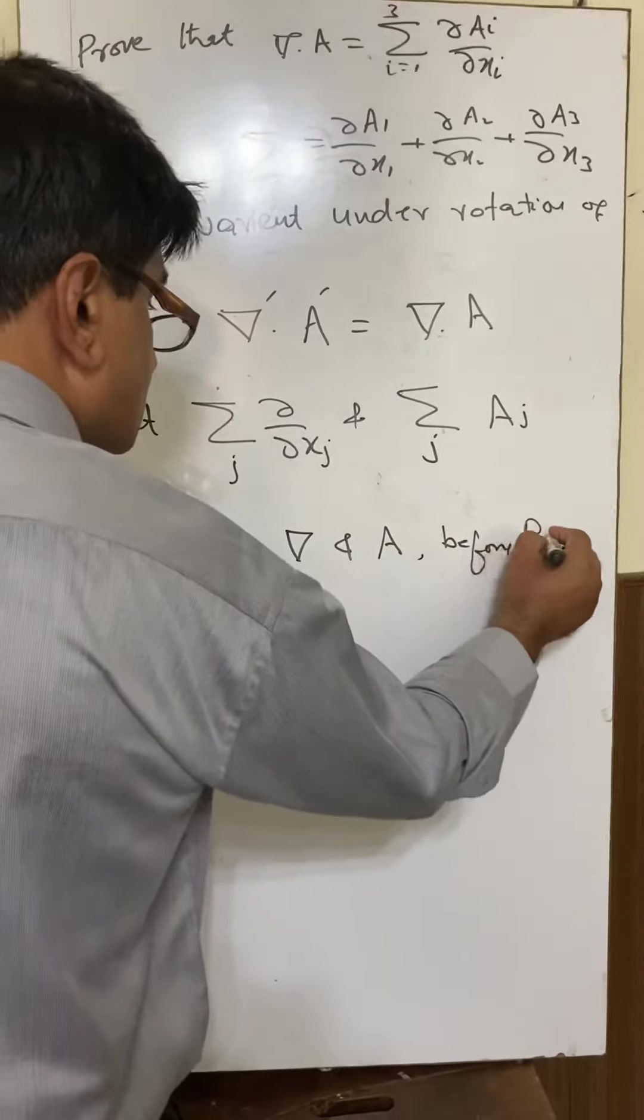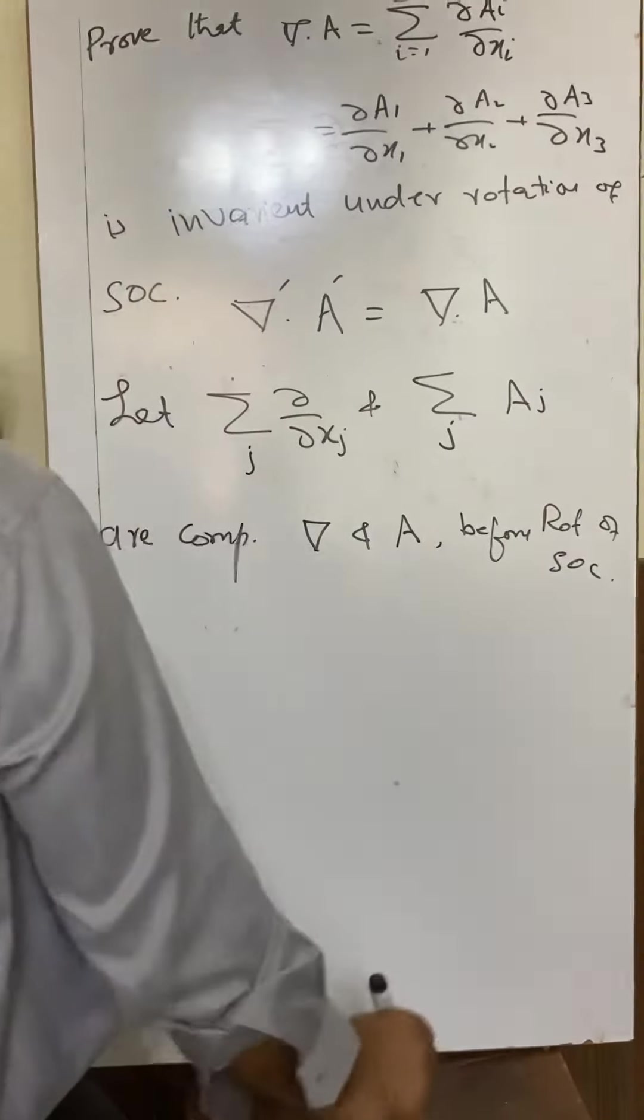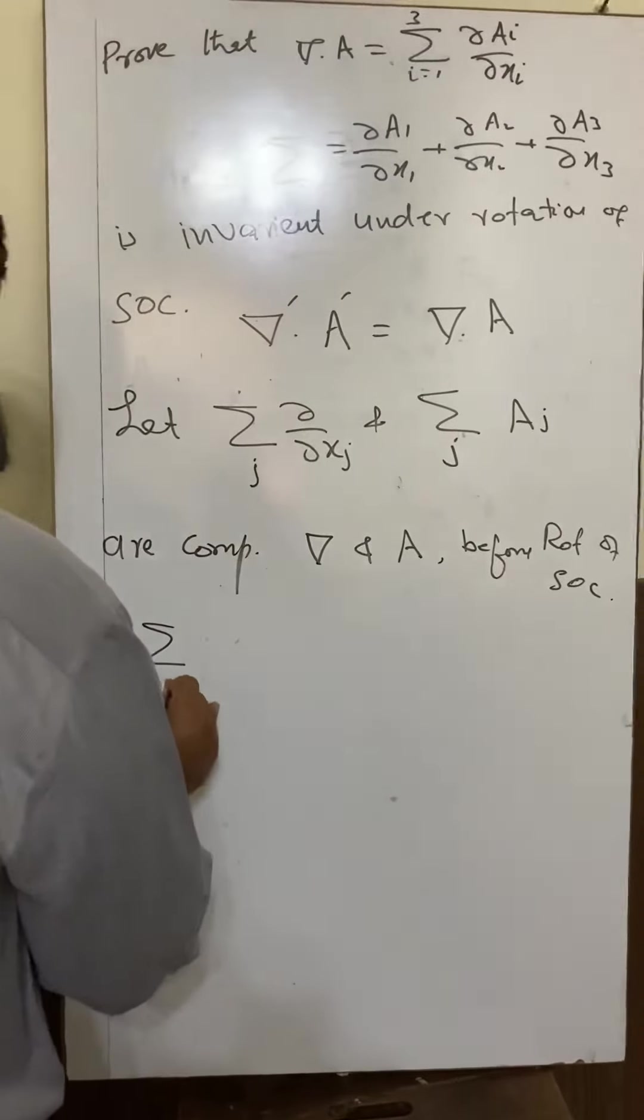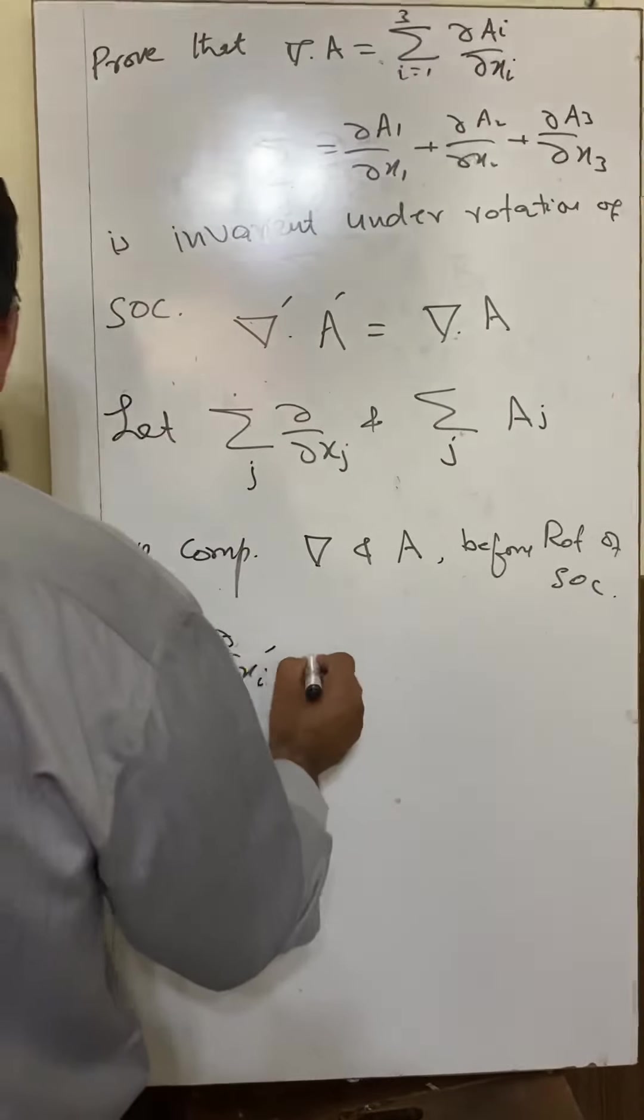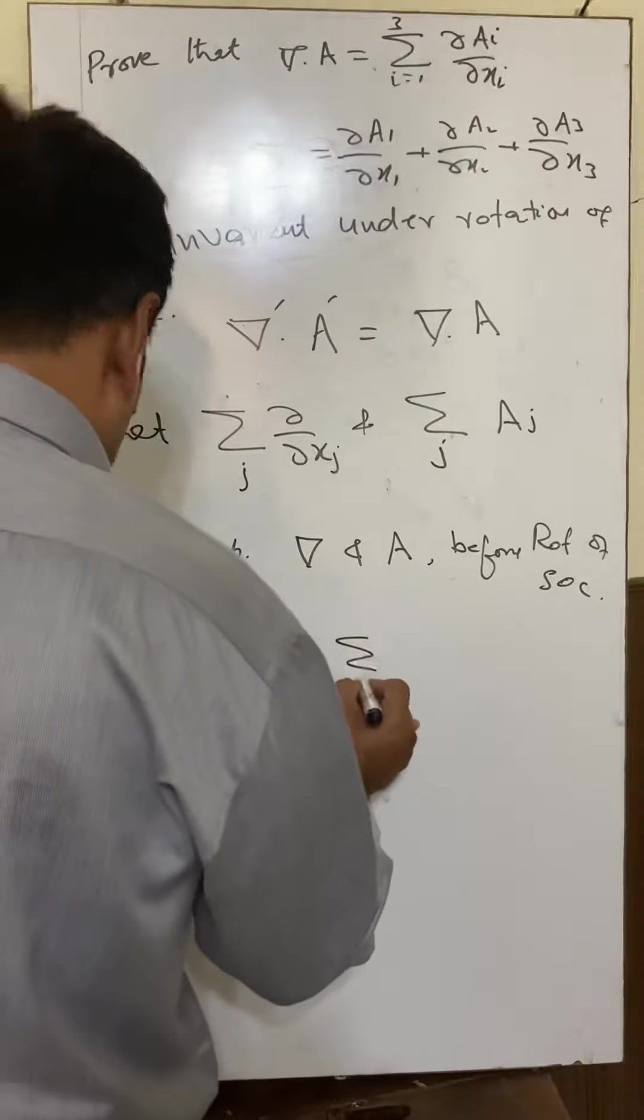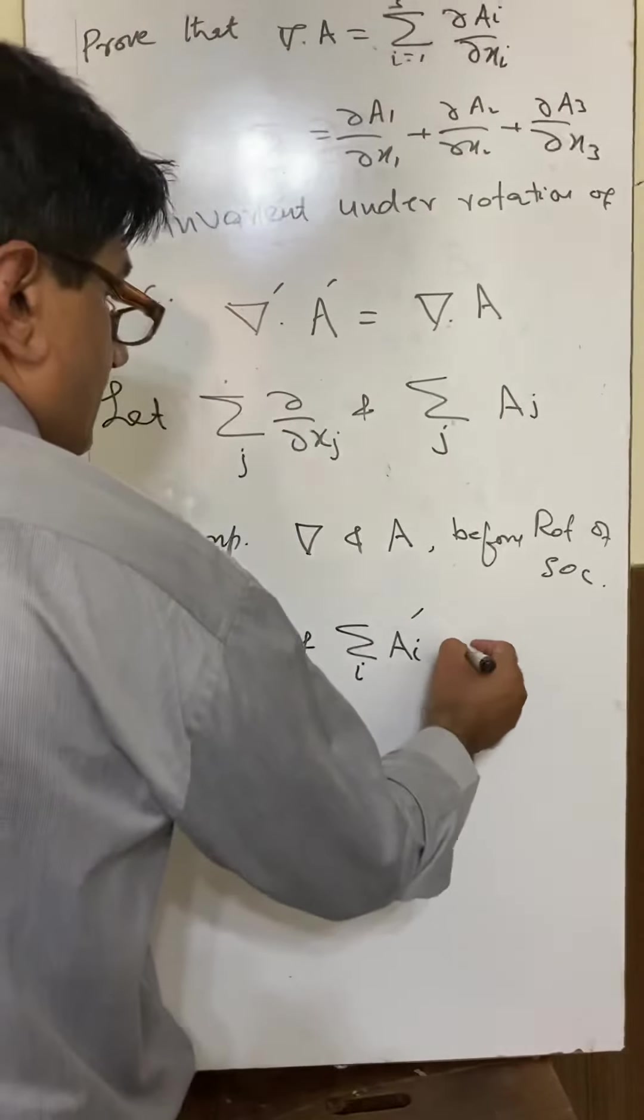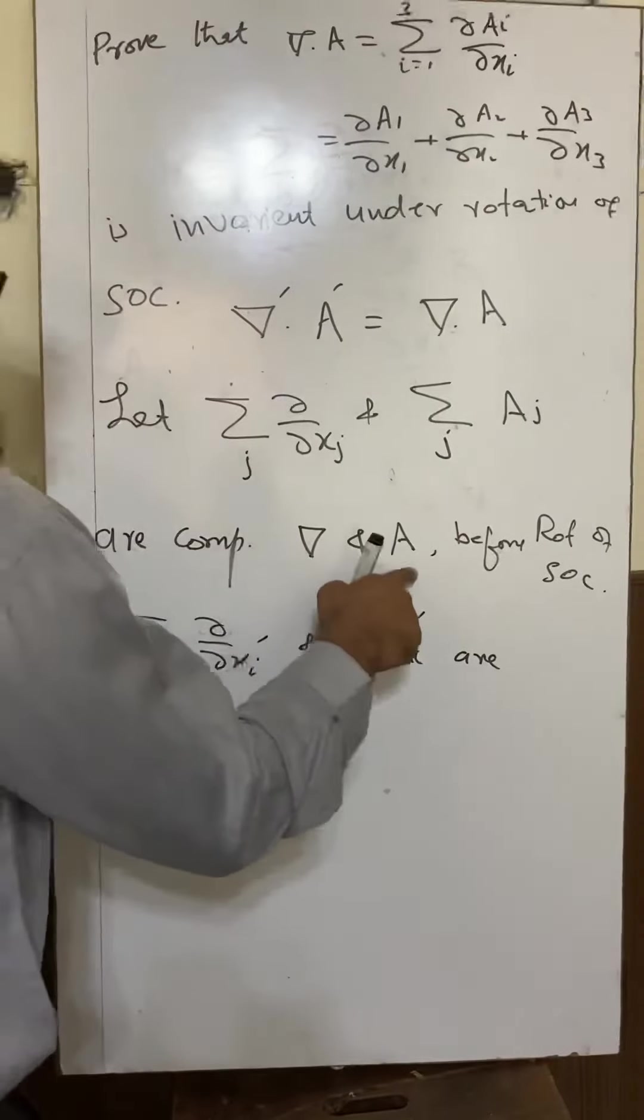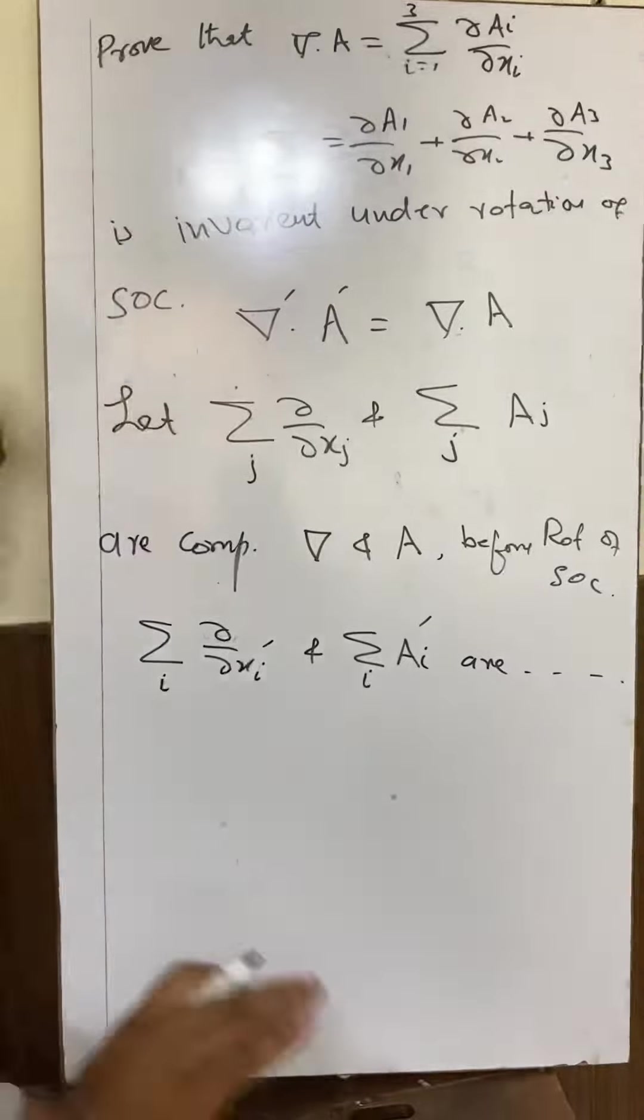whereas summation i partial over partial x_i prime and summation i A_i prime are the components of del and A respectively after rotation of the coordinate system.